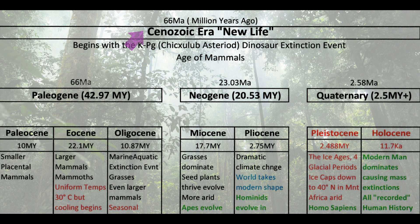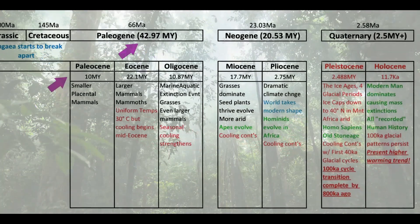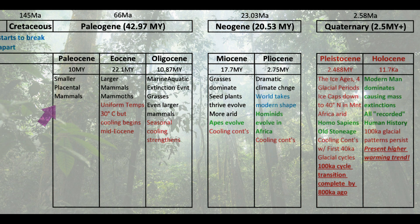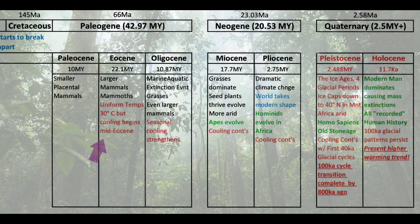There were three periods in the Cenozoic era. The Paleogene was the first, lasting about 43 million years and starting about 66 million years ago. There were three epochs in the Paleogene. The first was called the Paleocene, which lasted about 10 million years — this is when smaller placental mammals started to evolve because of the niche left open from the absence of reptiles and dinosaurs. The Eocene was the next epoch; we're still on a greenhouse Earth at this point, and larger mammals and even mammoths are starting to evolve.